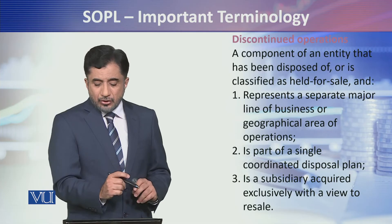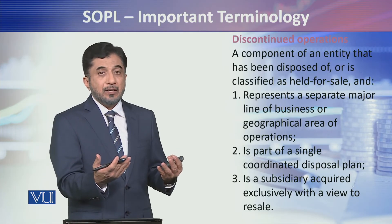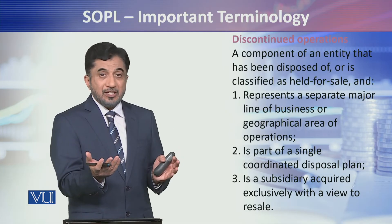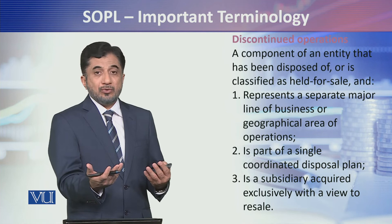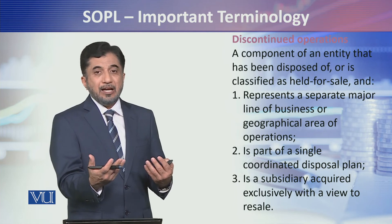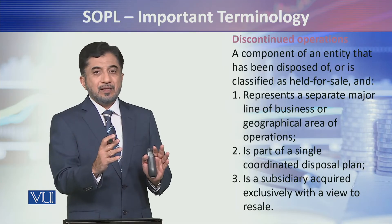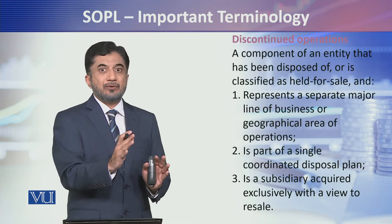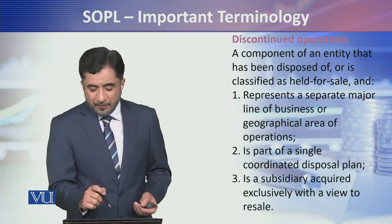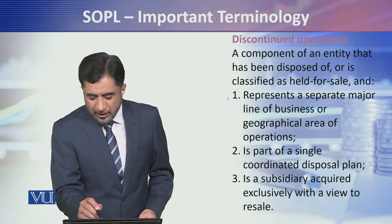तो discontinued operation यहां तो आप dispose of कर चुके हैं during the period। यहां फिर आपने उस group of cash generating unit को, उस component of an entity को, आपने held for sale determine कर लिया — कि this is the component of an entity which is held for sale — तो उसको भी आप discontinued operation के तोर पर लेते हैं।